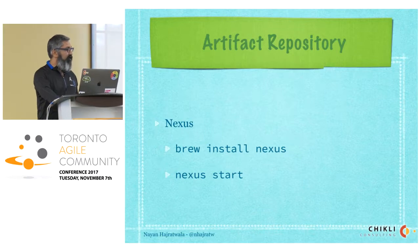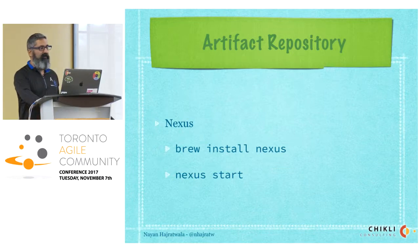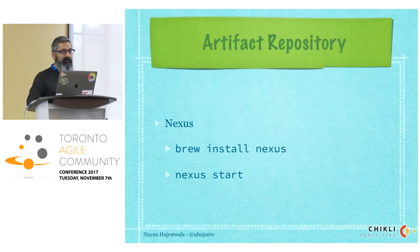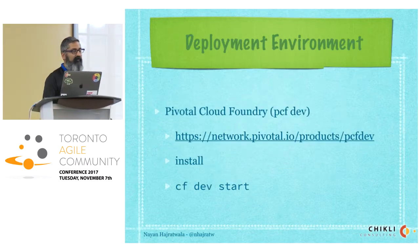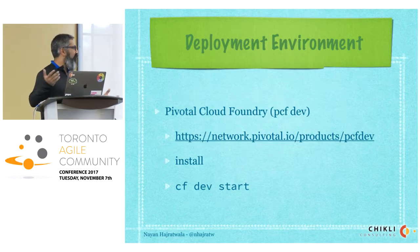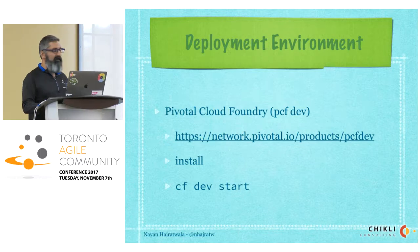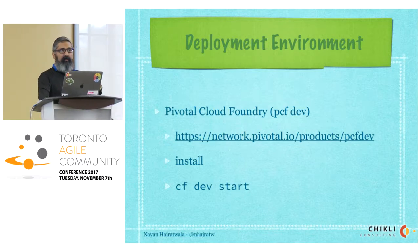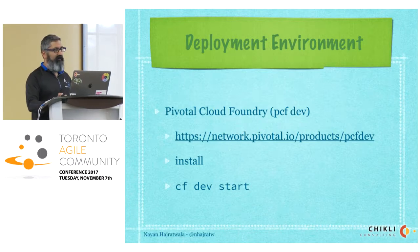For an artifact repository, in this demo we're going to use Nexus, which is a place where you can store versioned artifacts. On the Mac it's just brew install Nexus and then start. For our deployment environment, we're going to use Pivotal Cloud Foundry — there's a local version. I don't like to depend on networks during talks, so we're deploying to a local instance. You just install it, run cf dev start, and you're up and running.